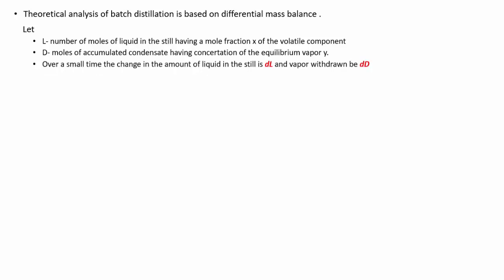Over a small time interval, the change in amount of liquid in the still is dL, and the vapor drawn off will be dD — as the liquid evaporates, the amount of liquid changes by dL and the distillate collected changes by dD. The total material balance gives: minus dL equals dD, meaning the liquid amount evaporated equals the vapor withdrawn as distillate. The negative sign shows there is a decrease in the amount of liquid.